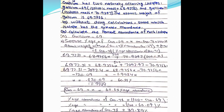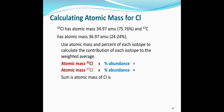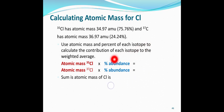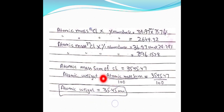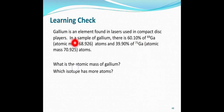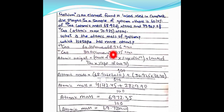For chlorine: Cl-35 has atomic mass 34.97 amu and Cl-37 has mass 36.97 amu. Using the provided percent abundances, multiply each mass by its fractional abundance and sum to get the atomic weight of chlorine: 35.45 amu. For gallium: given percent abundances and isotopic masses, applying the same formula gives an atomic weight of 69.723 amu.